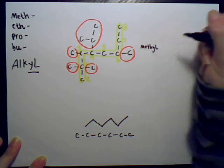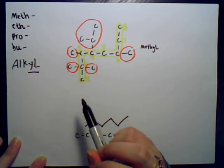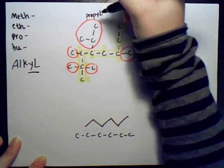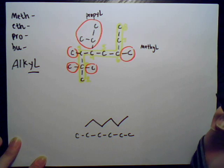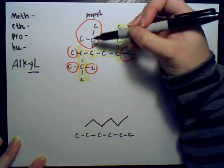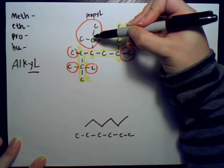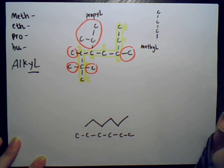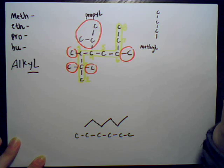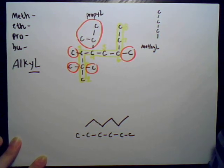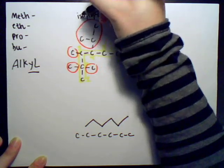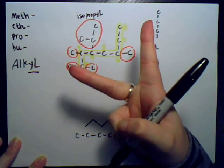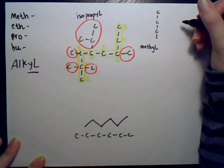This substituent with only one carbon would be a methyl group. This carbon has three carbons, so that would be a propyl group. However, a normal propyl would have three carbons in a row — one, two, three — attached like that. But this one has a different arrangement. It has a special name: isopropyl. 'Iso' just means it's arranged so that there are two carbons branching off of it.